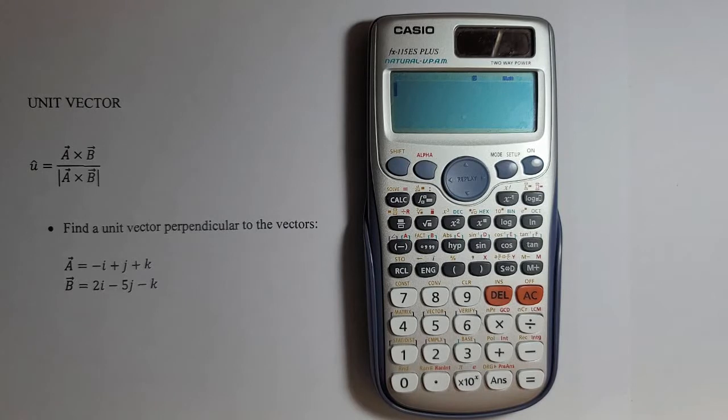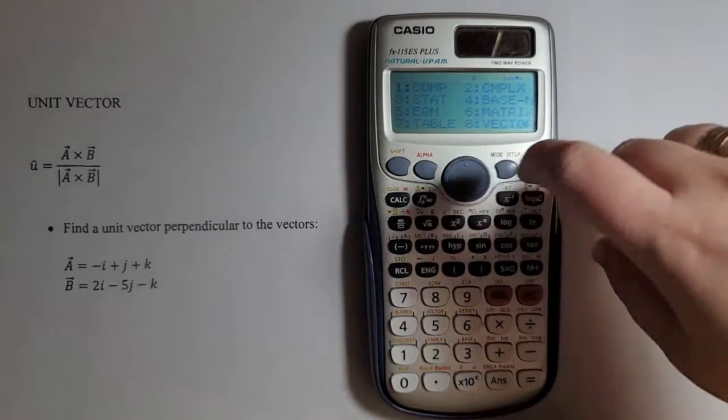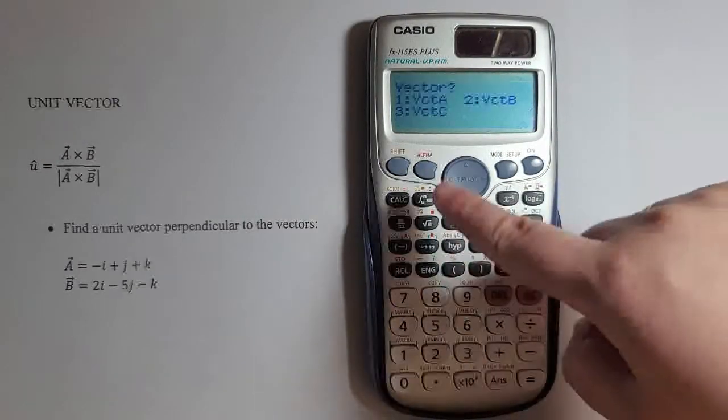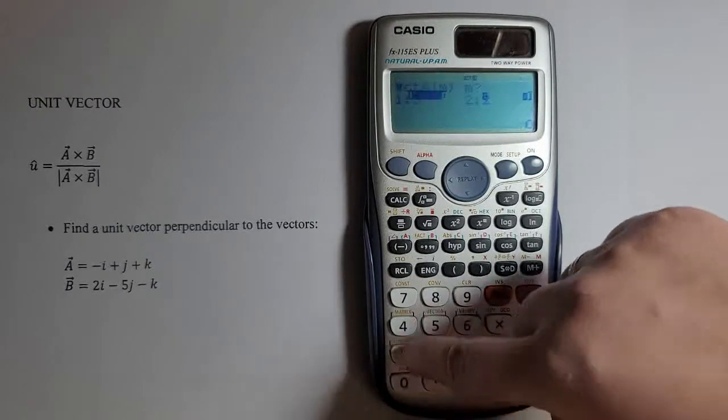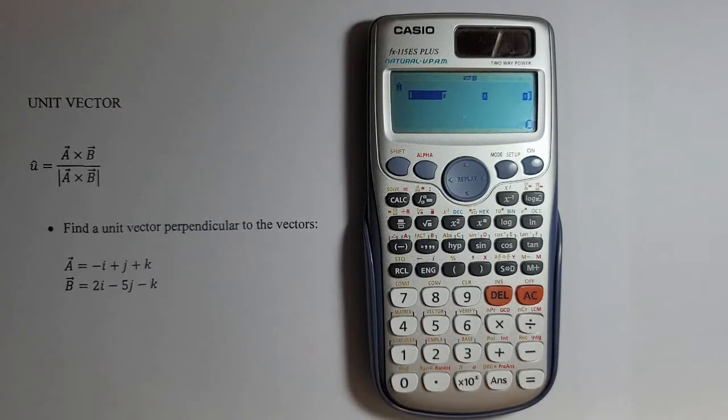Let me show you how to find the unit vector in vector mode of my Casio calculator. First, I will insert the values of the two vectors. I'll go to mode, press 8 for vector and 1 for vector a. I'll press 1 again for the three directions of the vector.